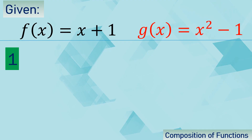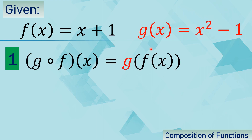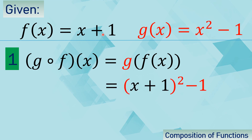So let us have this example. f of x is equal to x plus 1, and g of x is equal to x squared minus 1. We are looking for g of f of x. Remember that f of x will become the input of function g, and f of x is x plus 1. That is why we replace x of function g with x plus 1.